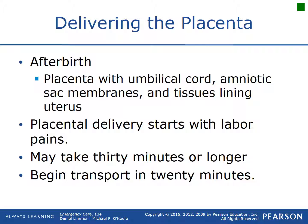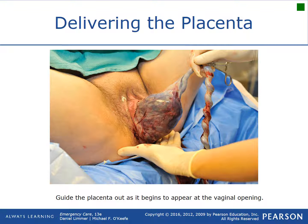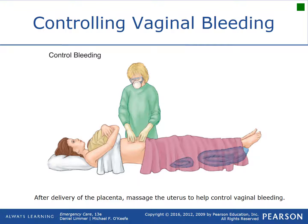The afterbirth — the placenta along with the remaining umbilical cord, amniotic sac membranes, and uterine tissues — can take up to 30 minutes or longer to deliver. Once everything is done, package the patient and get ready to go. Put the placenta in a bag because physicians will assess the blood and run labs and values from it. As shown in the final picture, rubbing the fundus right above the pubic bone helps massage the uterus and control vaginal bleeding.